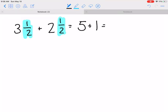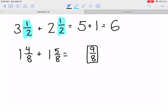1 and 4/8 plus, oh I'm sorry, 1 and 5/8. Well I know that 4 plus 5 is 9, so you get 9/8 which I know I can take out one whole and I'm left with 1/8, and 1 plus 1 is 2, so you have to add these together and you get 3 and 1/8.